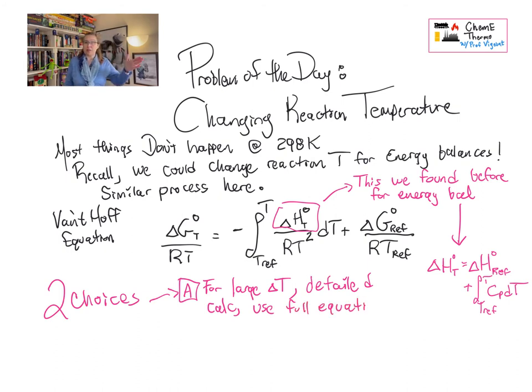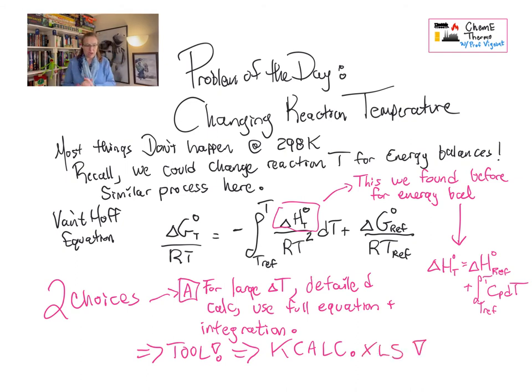So we have two choices here to deal with our changing delta G. A, if we have a big delta T, so I'm going to say, in general, over 50 degrees, certainly over 100 degrees, we're going to do a detailed calculation that takes into account CpDT over this entire range. And we have a tool for doing this. It's called kcalc.xls. It comes with your book, and there's a separate video on how to use that. And it is a marvelous tool that saves us a lot of fiddling around with huge long equations that don't really tell us that much.